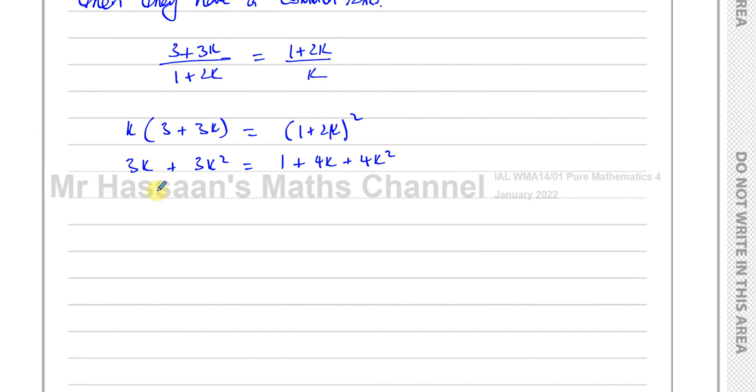And this is going to give me 1 plus 4k plus 4k squared. So I have a quadratic equation which I'm going to try to solve. I'll bring everything onto one side with the k squared positive. So 4k squared minus 3k squared is k squared, 4k minus 3k is plus k, and plus 1. So I end up with k squared plus k plus 1 equals 0.